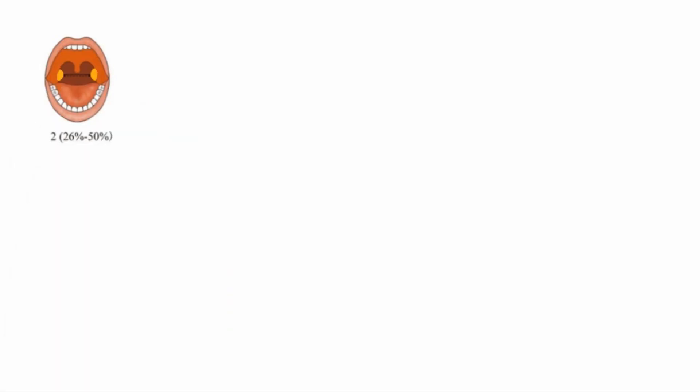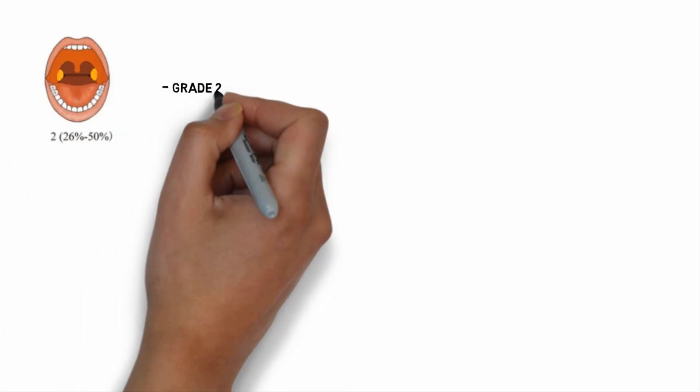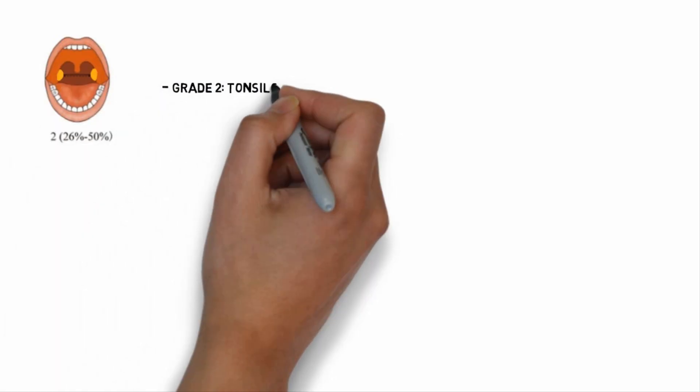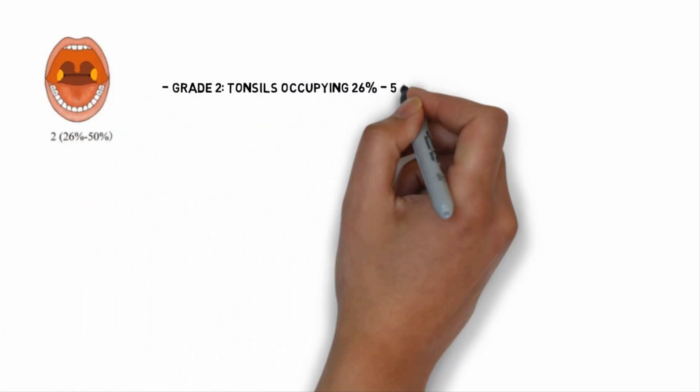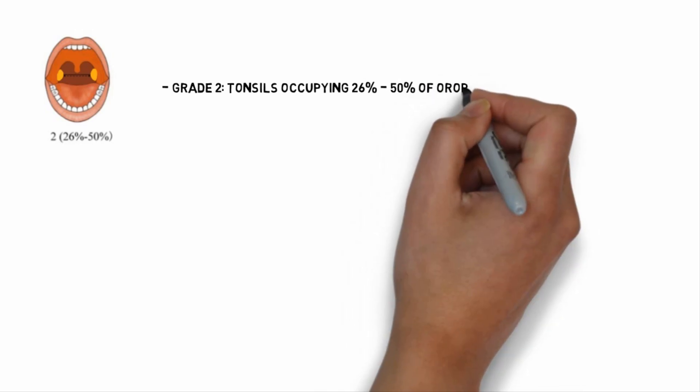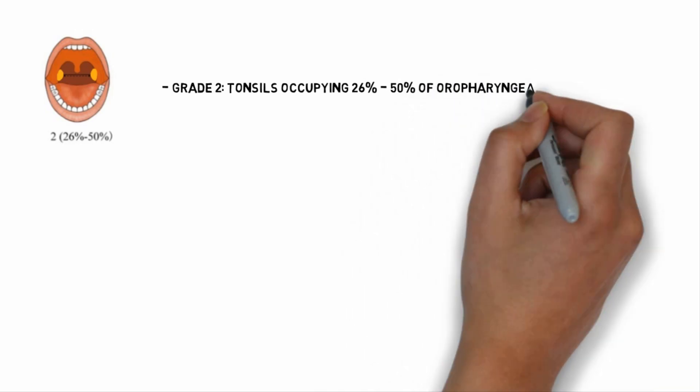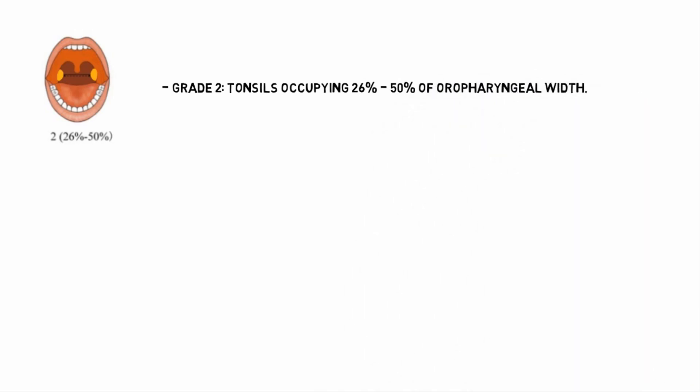Coming to grade 2, tonsils occupy 26 to 50% of oropharyngeal width. They cause slight discomfort and do not cause any significant obstruction of the airway.